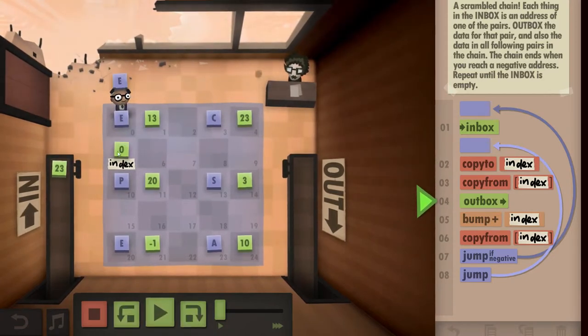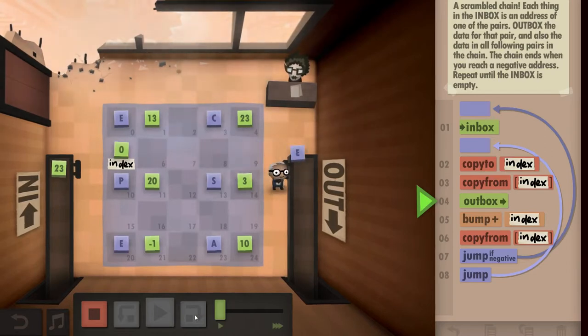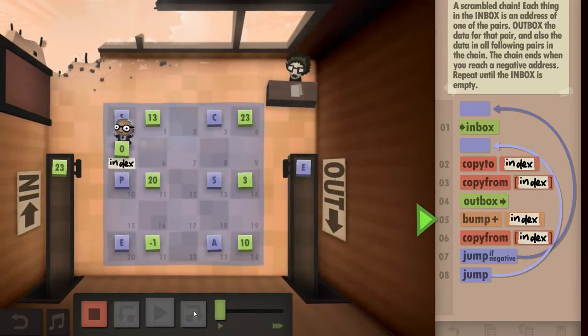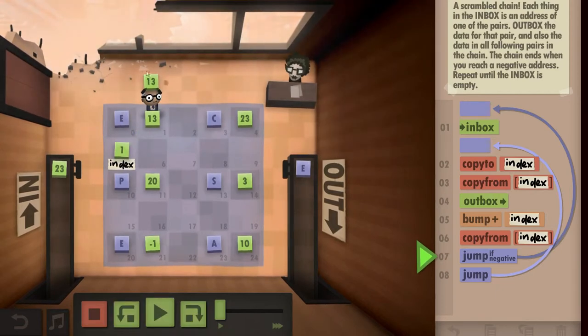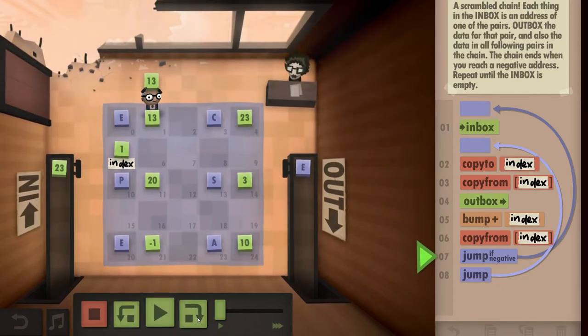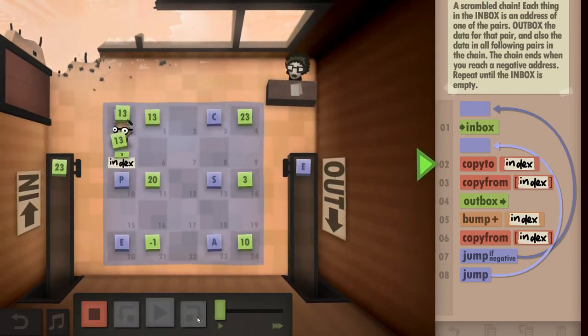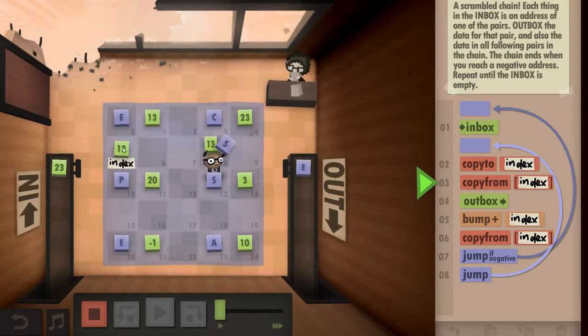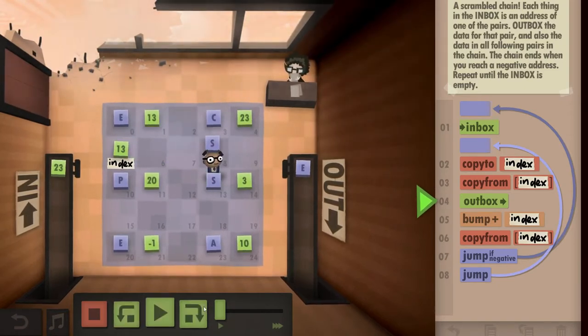So we initiate our index from the inbox, we get our E, outbox it. We bump up to get the new index to find our new index we want to then actually use. Copy that back to our index field. Take from the new address which is the S, outbox it.